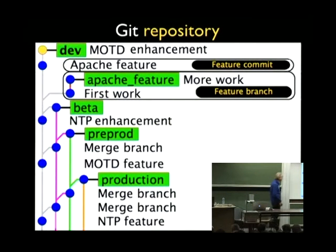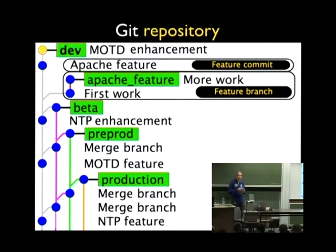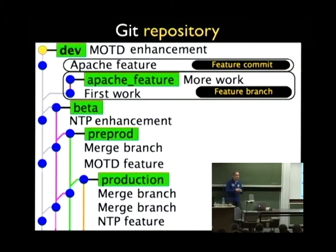Let's have a look at how the Git repository looks. You can see all the branches from production all the way up to development. The NTP feature is in every branch. At the top, the Apache feature is currently being worked on with two commits. When it's ready and working properly, we merge it to the development branch — and we want to do that with a single commit, atomic commits. If something breaks later, we want to be able to revert just one commit, not two, three, or five. We also shared this Git repository read-only to our users so they could see what we were building and what we were doing — a very open way of working.